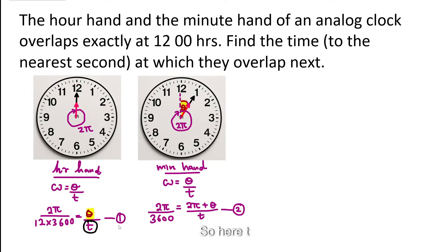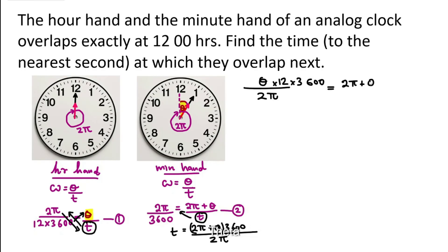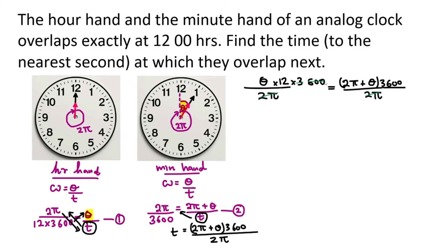So here, t is theta divided by 2 pi multiplied by 12 times 3,600. So what I did, move the t to that side, move the 2 pi to this side, and 12 times 3,600 next to the theta. So theta times 12 times 3,600 over 2 pi is equal to, let's make t the subject from here. So I'm going to bring t to this side, and to the right, I have 2 pi and theta, and I have 3,600 divided by 2 pi. So let's write it here, 2 pi and theta multiplied by 3,600 divided by 2 pi.